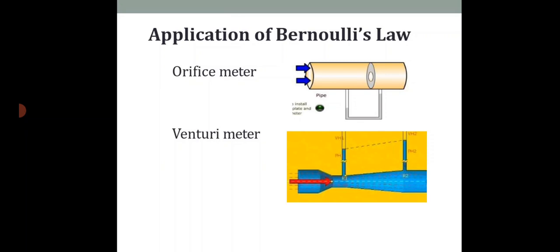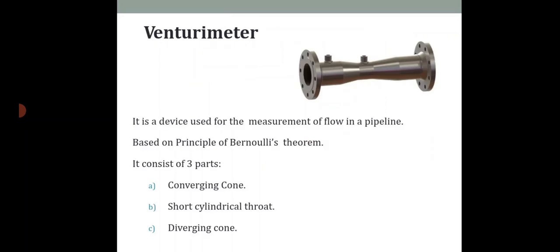The first application we discuss is the venturi meter. A venturi meter is a device used for measuring the rate of flow of a fluid through a pipeline. Its parts include a short converging section, a throat, and a diverging section. The venturi meter works based on Bernoulli's theorem.